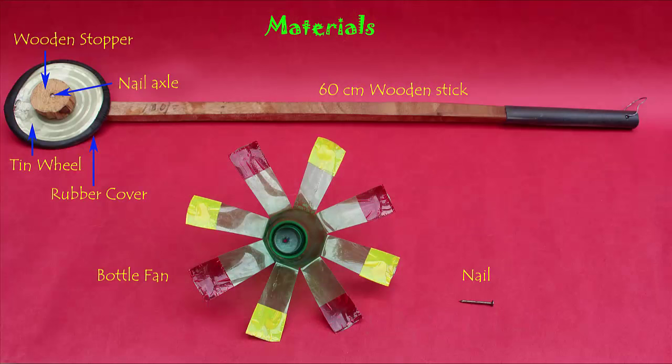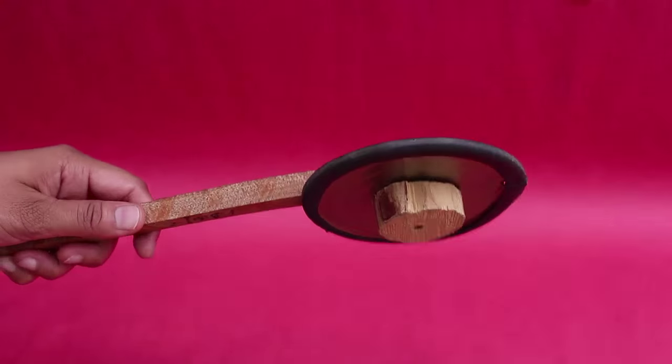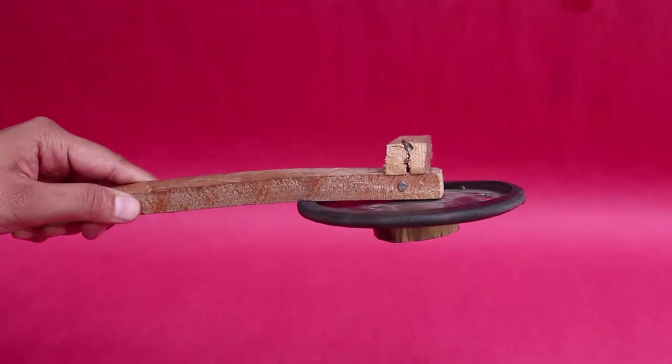To make this delightful toy you need a 60 centimeter wooden stick, tin lid with rubber cover on its rim, nails, and a 2 liter plastic bottle.